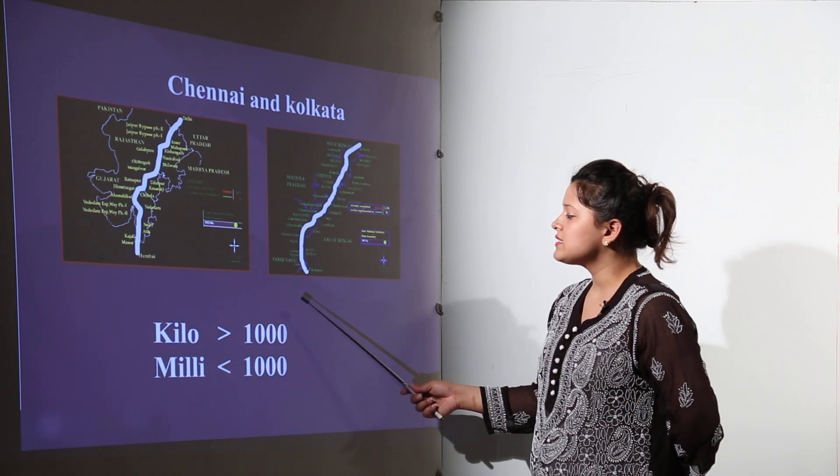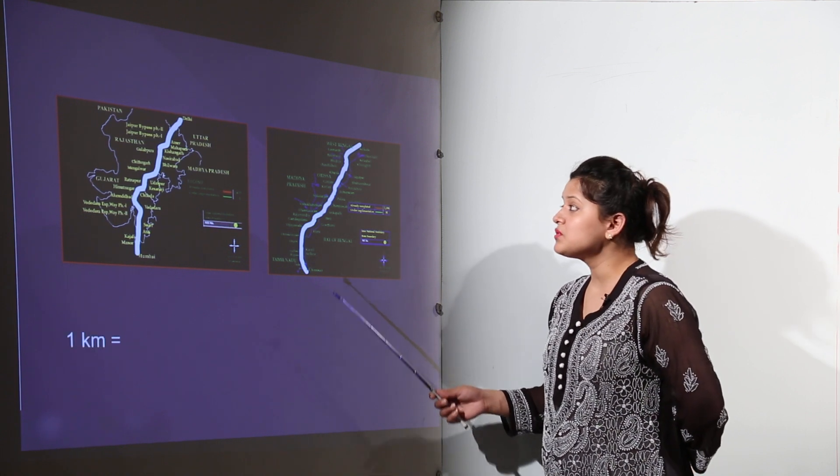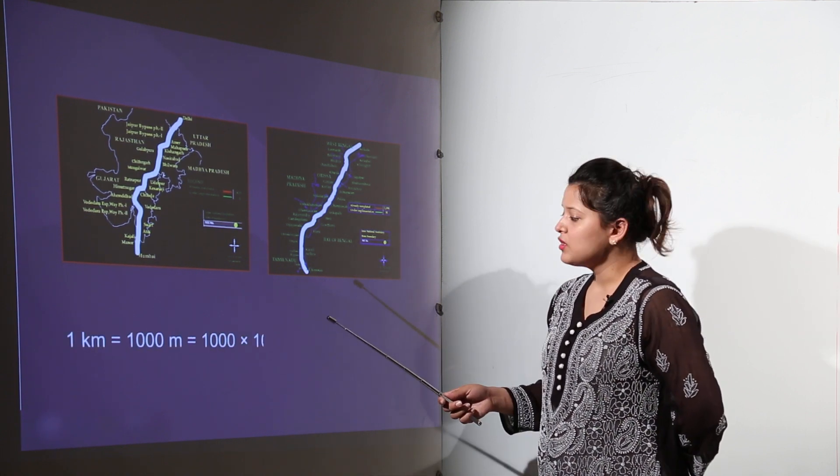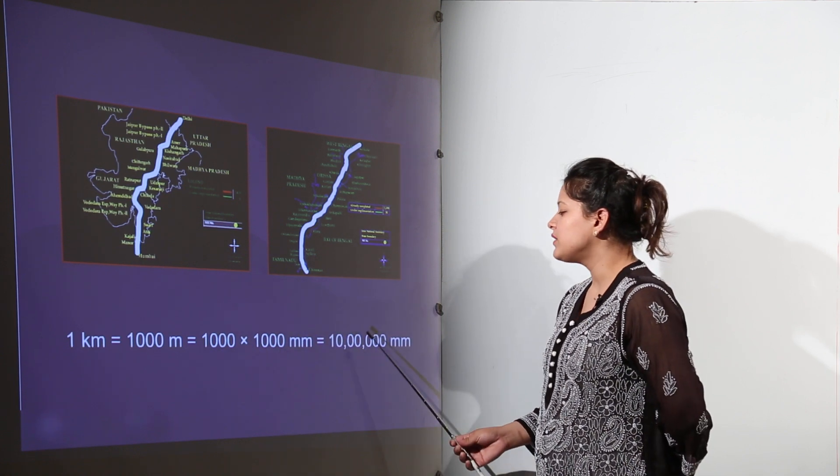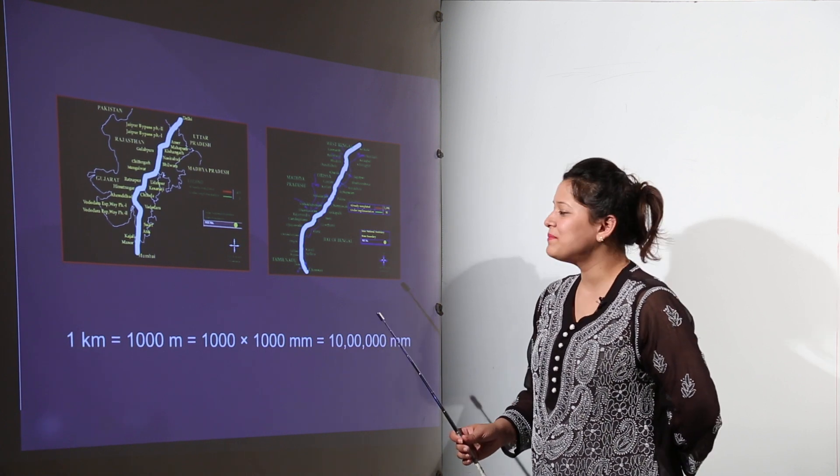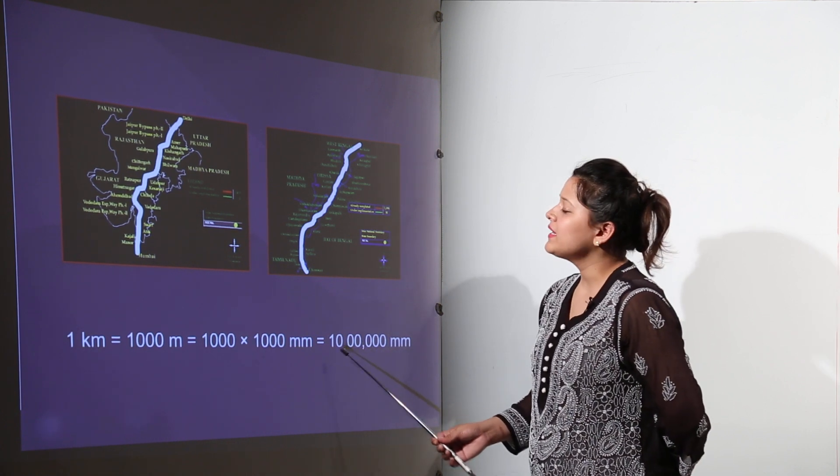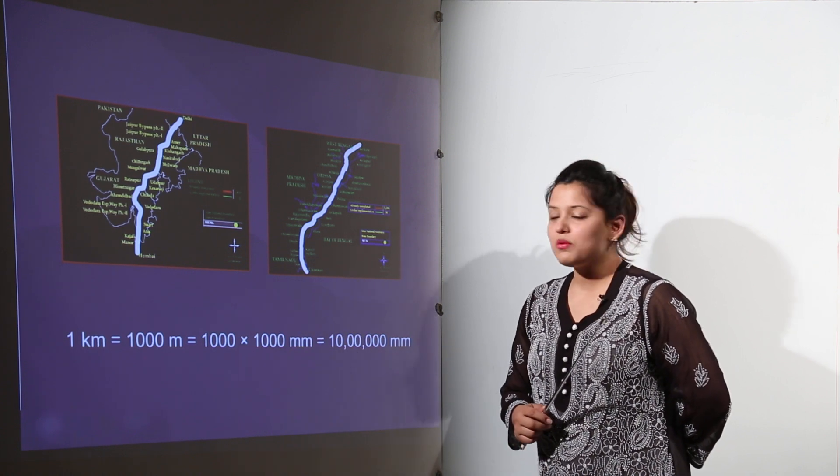So therefore for measuring the distances between the two places you can use the unit for measuring that is kilometers. So one kilometer is definitely greater one thousand times. And millimeter is one thousand times smaller. So one kilometer is equal to one thousand meters or that would be ten lakh millimeters as we have learnt to read the big numbers now. So the large distances can be measured with the help of kilometers.